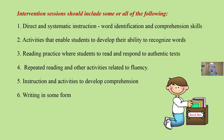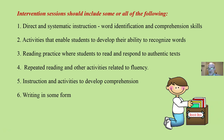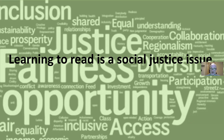Interventions should include some or all of the following: direct and systematic instruction in both word identification and comprehension skills; activities to develop students' ability to recognize words; reading practice where they can read and respond to real texts, not artificial texts used to reinforce a letter sound or pattern; repeated reading and other activities to develop fluency; instruction and activity to develop comprehension; and writing in some form — there are a variety of simple, effective, short writing activities you can use. Remember, learning to read is a social justice issue.